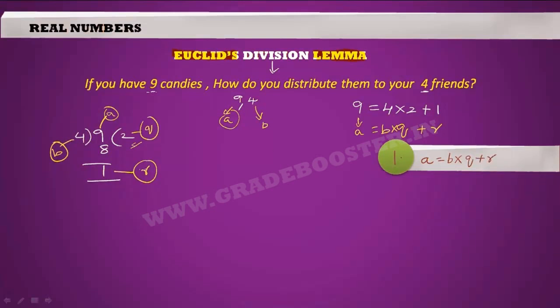We are going to observe two more interesting facts from this division. Let us see what are they. The second one is for any given numbers A and B, its quotient and remainder are unique. That means whoever divides 9 and 4, or whenever or however you divide 9 and 4, the quotient and remainder will be the same. That means Q and R are unique.